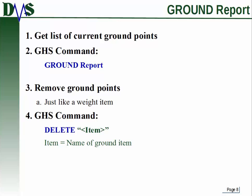There are a few more things to know. To get the list of current ground points, type GROUND REPORT. To delete existing grounding points — for example, to clear them out and put in a new set — it works just like deleting a fixed weight item: use the DELETE command, then type the name of your ground item.